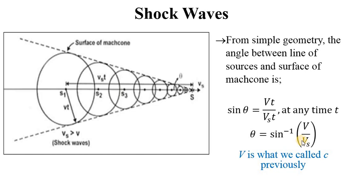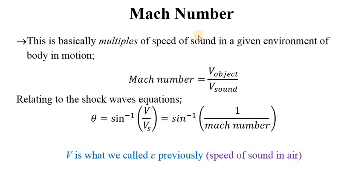We now introduce the concept of Mach number, which represents multiples of the speed of sound in a given environment for a body in motion. Mach number is obtained by dividing the object's velocity by the velocity of sound in that environment. Relating this to the shock wave equation, the angle theta can also be found using sine inverse of 1 over Mach number.